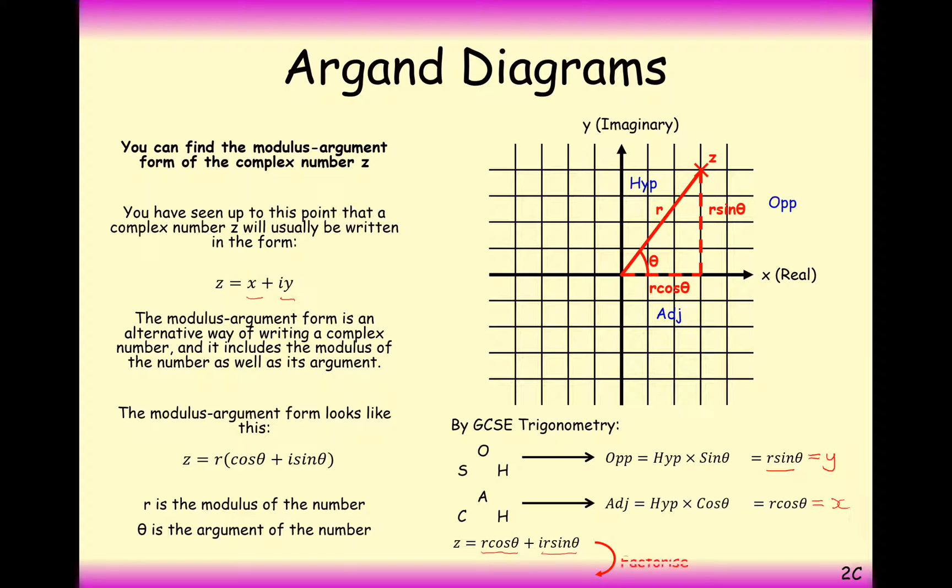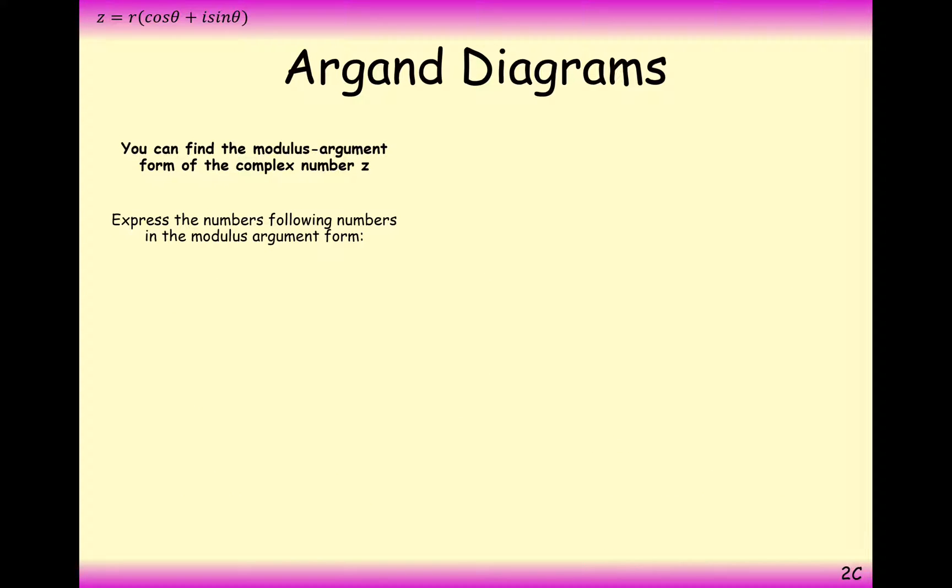And then just factorise out the r to get it in its final form, and we've got here that z equals r brackets cos theta plus i sine theta, where r is your modulus and theta is your argument. So we can write any complex number in either form. There's not one way that works for a specific complex number. All complex numbers can be written in both forms.